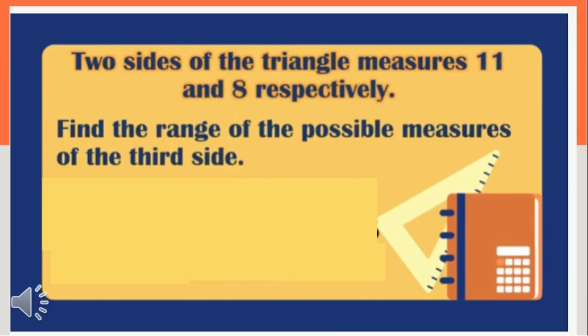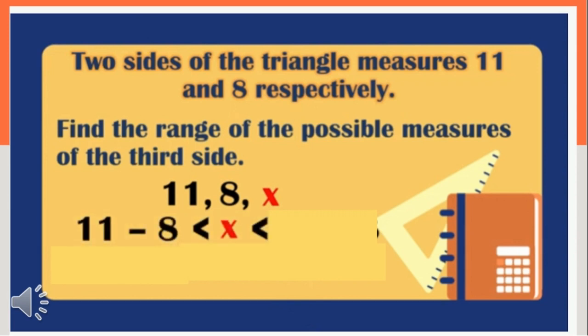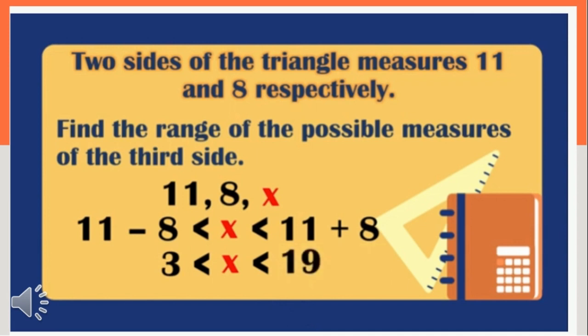Another example: two sides of the triangle measure 11 and 8 respectively. Find the range of the possible measures of the third side. We use x to represent the third side. For the minimum value: 11 minus 8. For the maximum value: 11 plus 8. Simplifying: 11 minus 8 is 3, and 11 plus 8 is 19. The range of the third side is x is greater than 3 but less than 19.